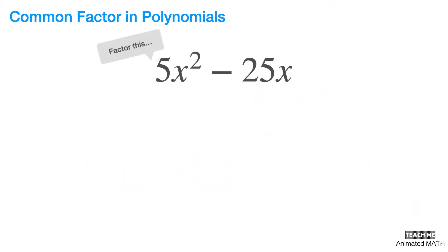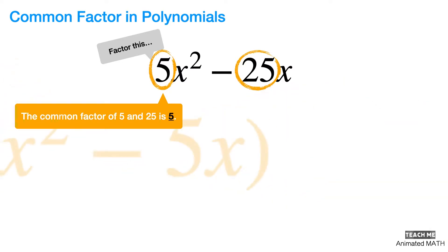Let's try factoring 5x squared minus 25x. First things first, you can spot that 5 and 25 have a common factor, and that is 5. Which means that we can rewrite the expression as 5 times x squared minus 5x. But we can do much better than that.